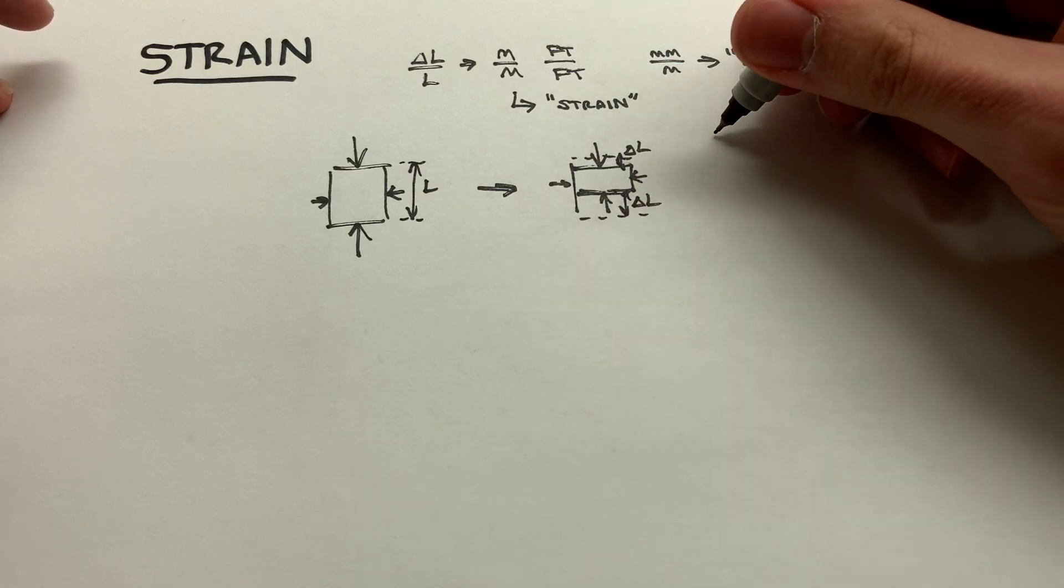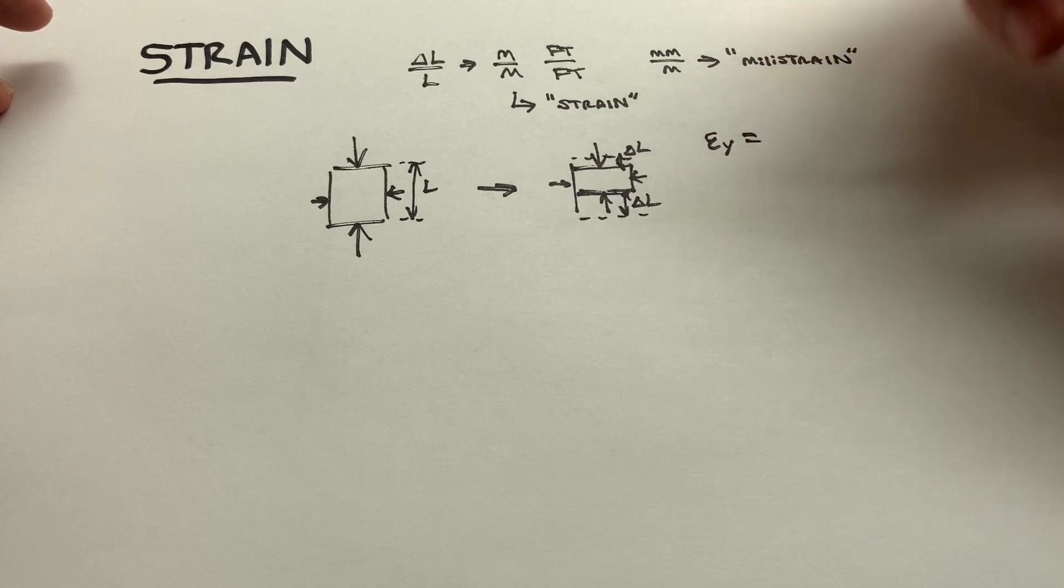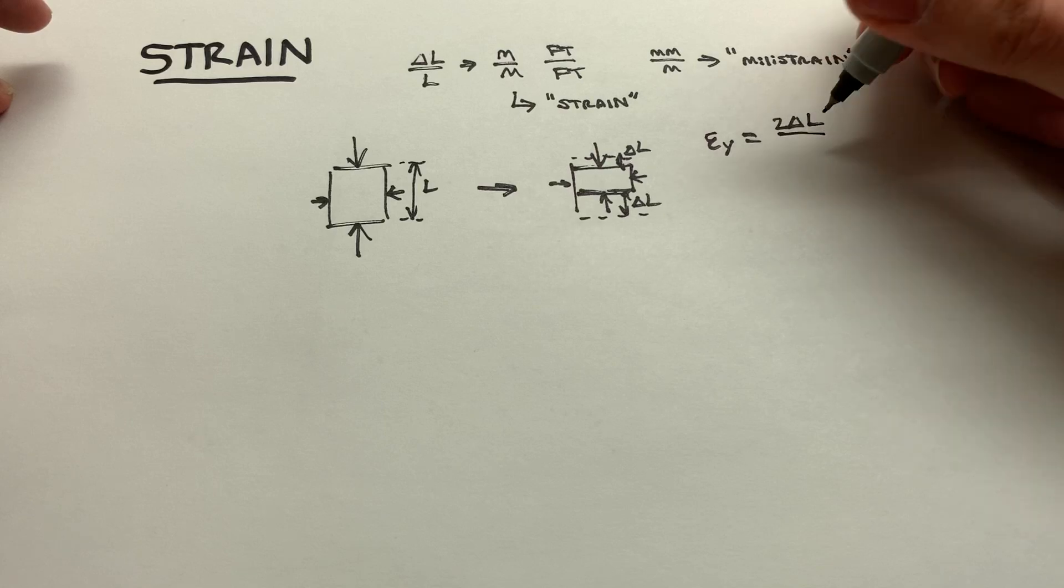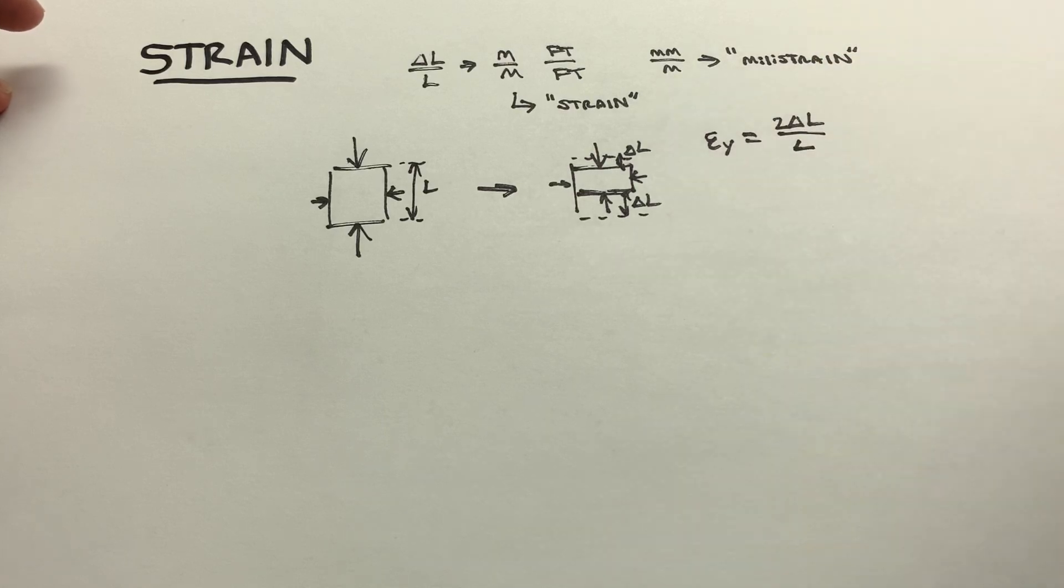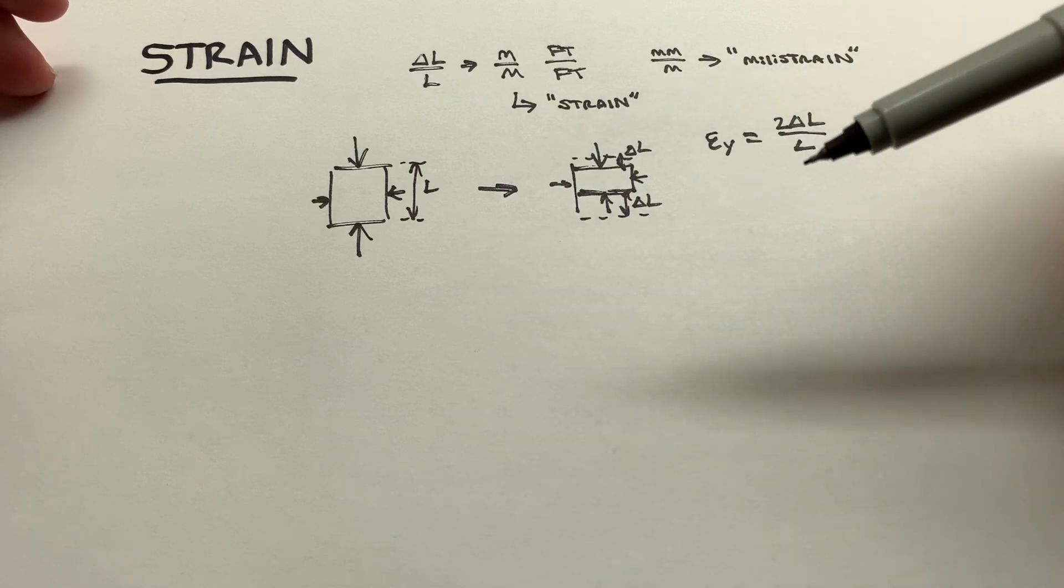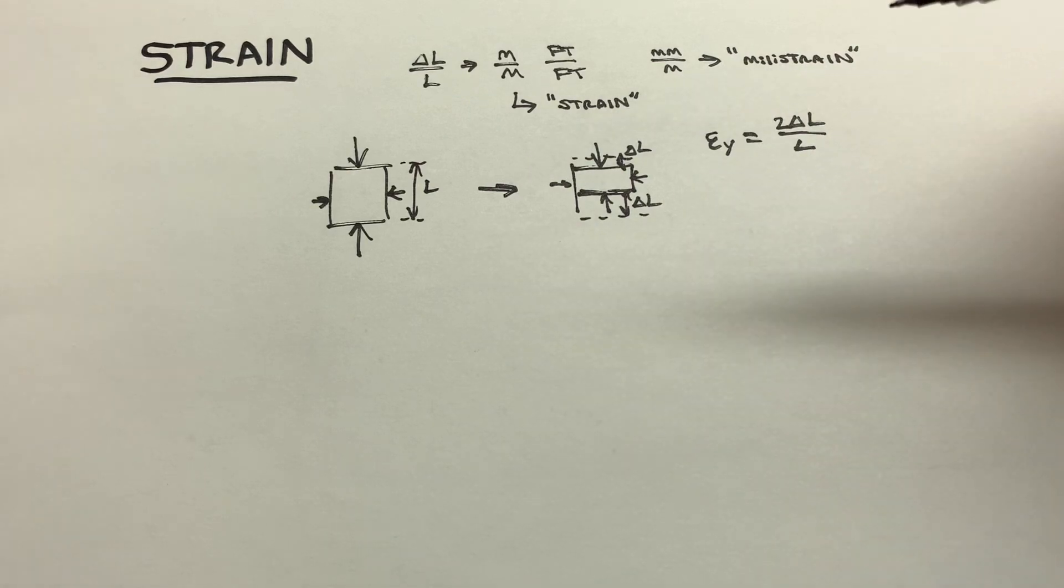Then we might say that the strain in the y direction, epsilon y, is equal to 2 delta L, the total deformation divided by the original length L. Since we're using the original length, this is an engineering strain, as compared to regular strain, which is if it were to continuously adjust and not use the original length. There are a million steps in between here that could have had different lengths. And we could go from any point in time to the next. But we choose the starting point for simplicity. And most of the time, this works perfectly fine.